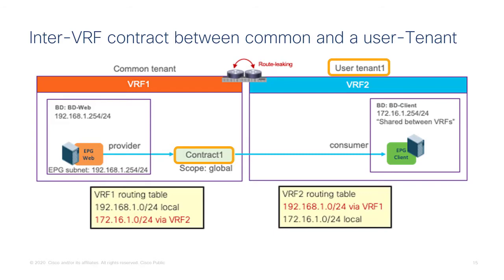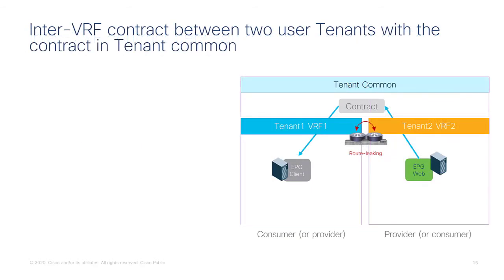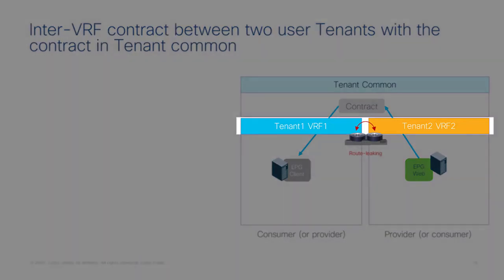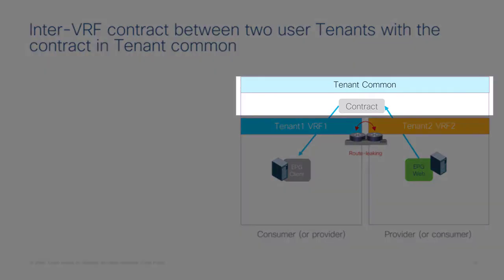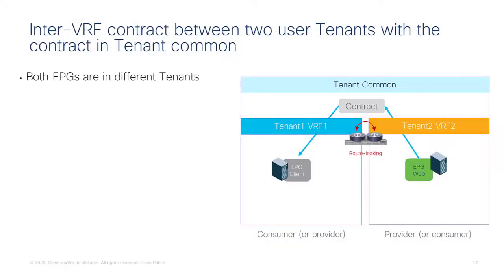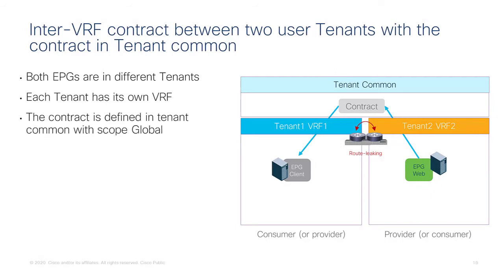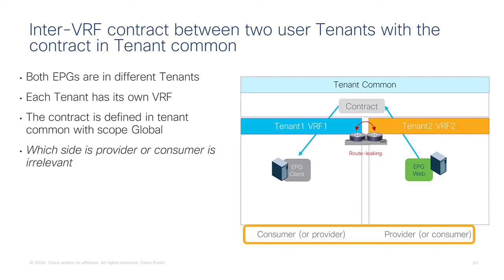Now consider the case where you have two user tenants, each with their own VRF, using a contract defined in tenant common. The EPGs are in different tenants and different VRFs, and the contract is visible from both because it's defined in tenant common with a global scope. Which side is provider or consumer is irrelevant from the inter-tenant perspective — it's only relevant for VRF leaking, so you need to know which subnet to put where, but otherwise there's nothing really special.